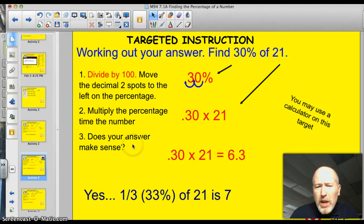Number 3, does your answer make sense? Well, yeah. One third of 21 is 7, so 0.3 is going to be really close, and 6.3 is close.